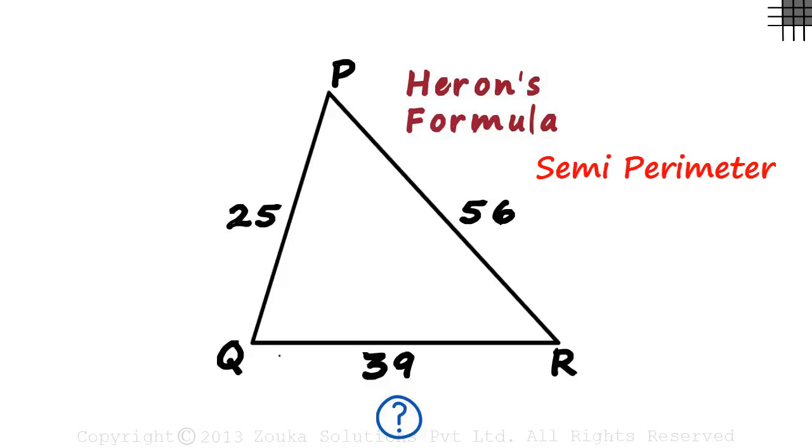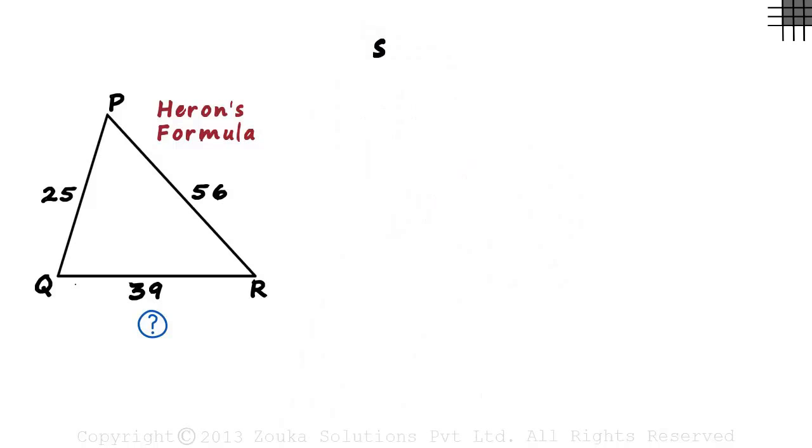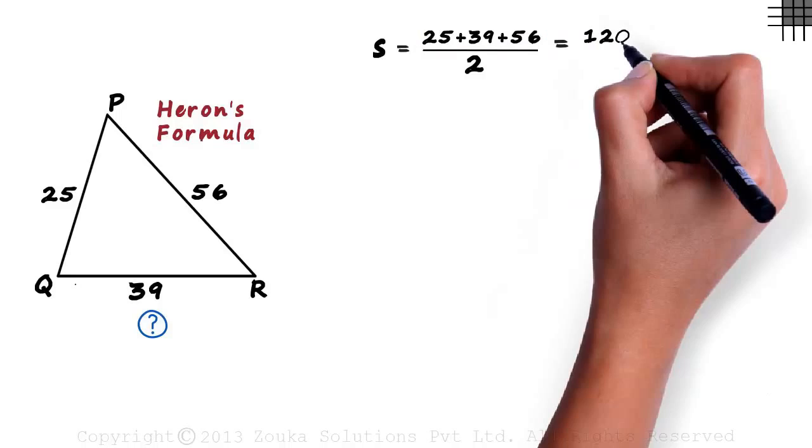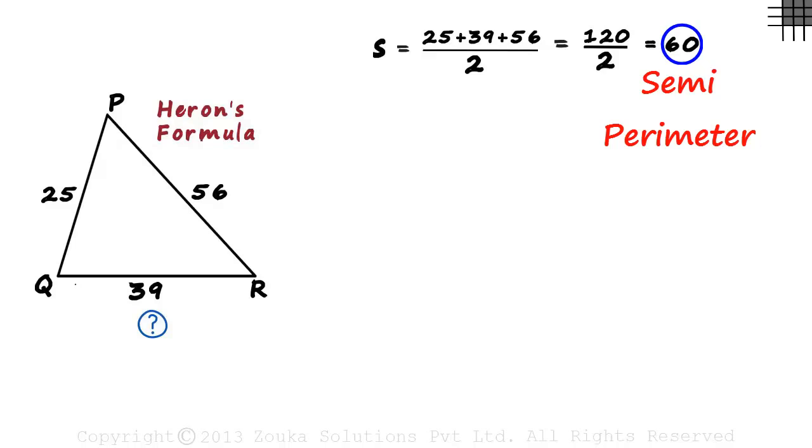Let's zoom out and find the semi-perimeter which is S. The perimeter will be 25 plus 39 plus 56, the sum of all three sides. And the semi-perimeter will be the perimeter divided by 2. This sum equals 120, the semi-perimeter will be 120 by 2 which equals 60 units. We have found the semi-perimeter.